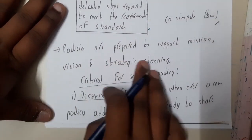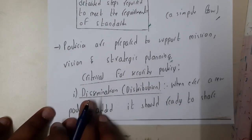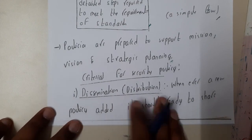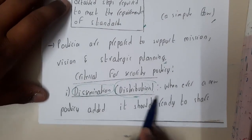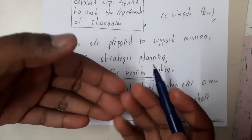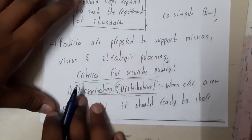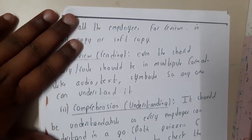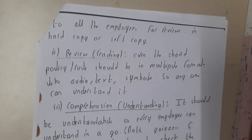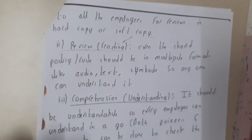Now let us go through the criteria for security policies. The first criterion is dissemination, which means distribution. Whenever a policy is ready, you should share it with everyone. If you want it to be followed, you need to distribute it to each and every member. The sharing method can be in any format — paper, presentations, photocopies, or any other way — but you must share it.